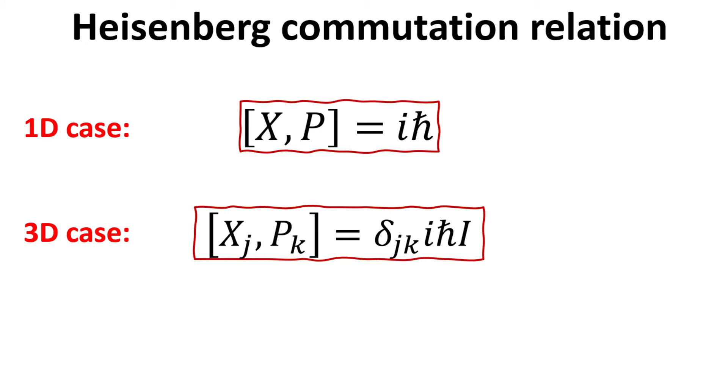How about the case of three dimensions? In this case, let's use the j and k indices to denote the three different degrees of freedom: x, y, and z. Since x, y, and z are independent directions,